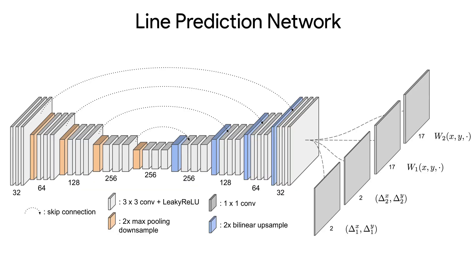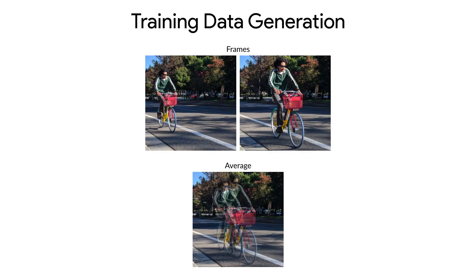Here's a diagram of our network architecture, which is a U-shaped neural network that predicts lines at each pixel. A differentiable renderer then blurs along those lines, as we explain in more detail in our paper.